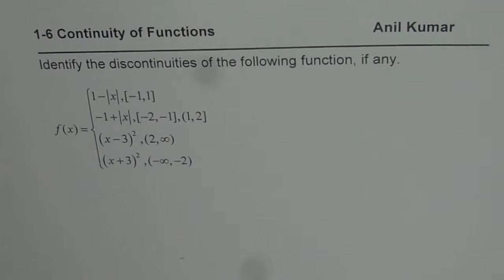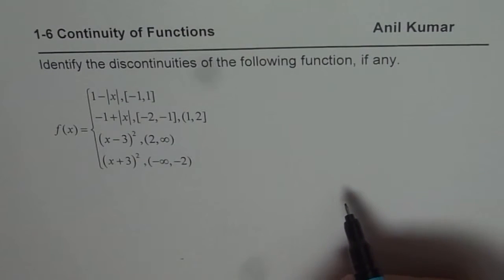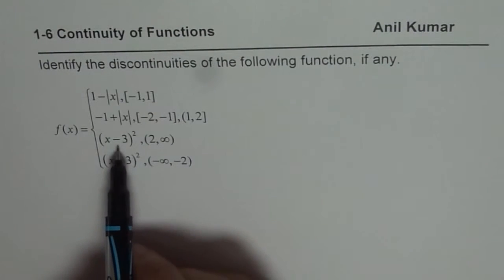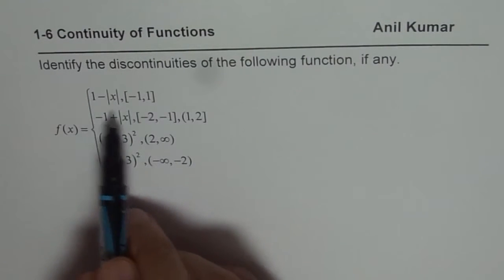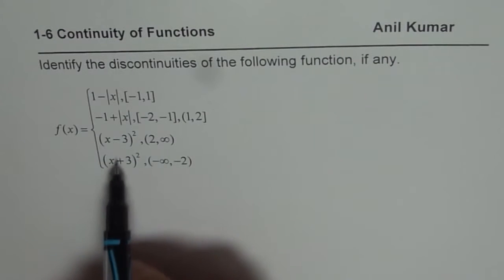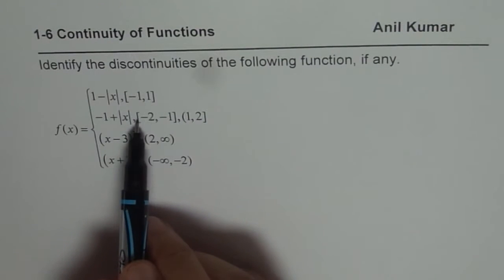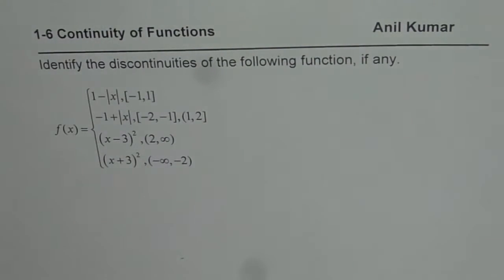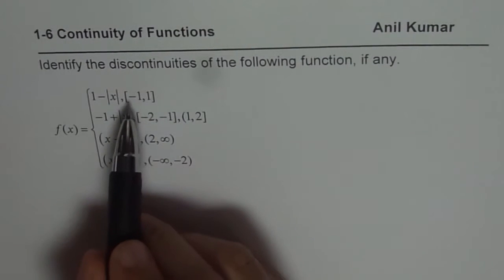So in the entire domain, we have a piecewise function with four different pieces. We need to check whether this function is continuous or not, and if it is discontinuous, what are the points of discontinuity. You can pause the video, answer the question, and then look into my suggestion. Each piece in itself is actually continuous — it is a combination of constant and absolute function, or it is a parabola, a quadratic function. All these pieces are continuous in their own domain. But do they have the same value at the points where they overlap? If they overlap, they are continuous; if they do not, then they have jump discontinuity. So let us begin by calculating the value of the function at these boundary points.